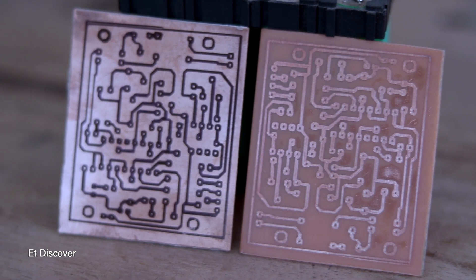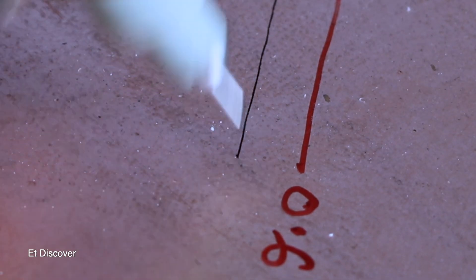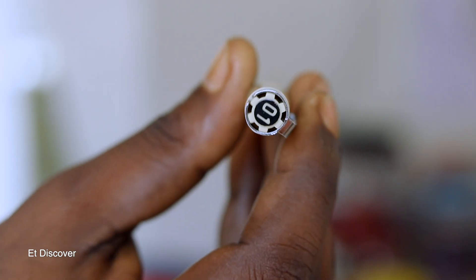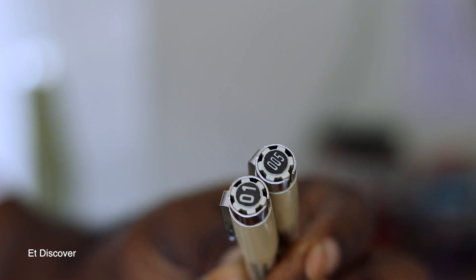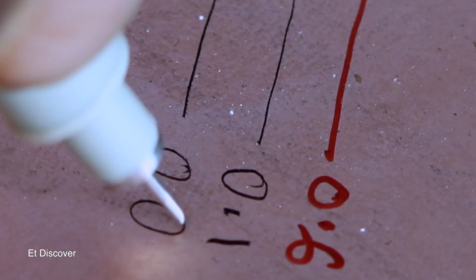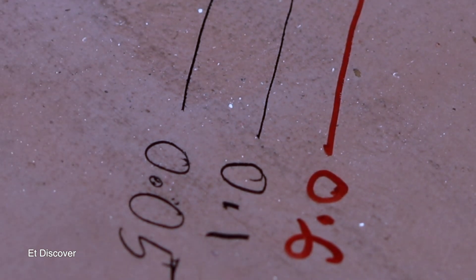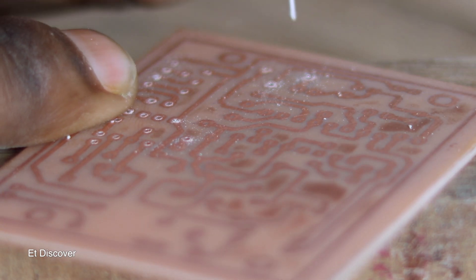But here another question arises: how to make a very thin line with this CNC machine? This is pretty easy. Here I'm using a 0.6mm pen, as you know. Instead of 0.6, if I use 0.1mm or 0.05mm, then you can make very very thin lines. That means you can make very insane PCBs. But friend, this is quite experimental for beginners.